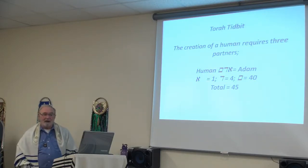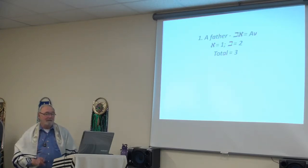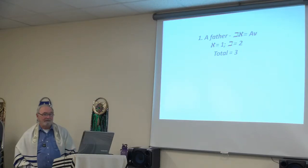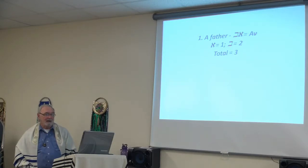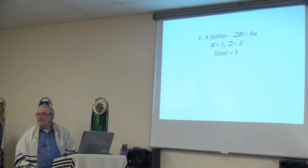We said it takes three in order to procreate a human being. First of all, it takes a father — an av. The letters for av are aleph and bet. Av means father in Hebrew. The aleph equals one and the bet equals two, so the total for the father is three.